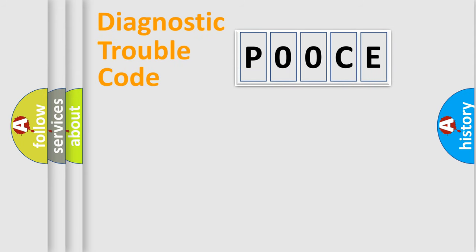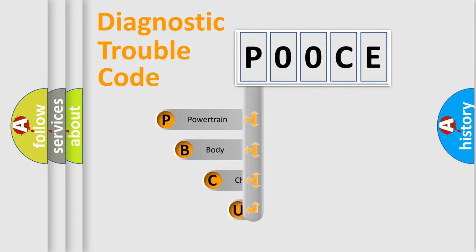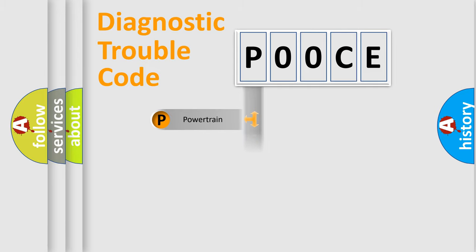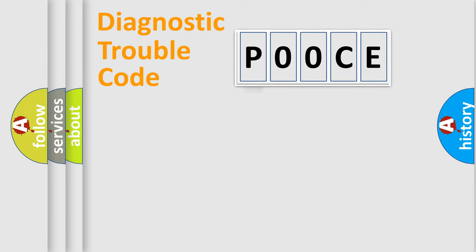Let's look at the history of diagnostic fault code composition according to the OBD2 protocol, which is unified for all automakers since 2000. We divide the electric system of the automobile into four basic units: Powertrain, Body, Chassis, and Network. This distribution is defined in the first character of the code.